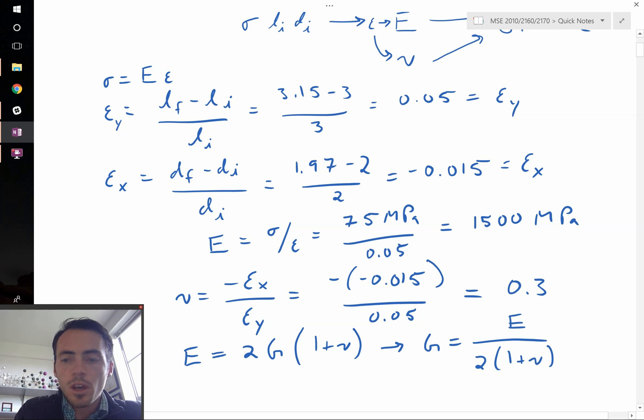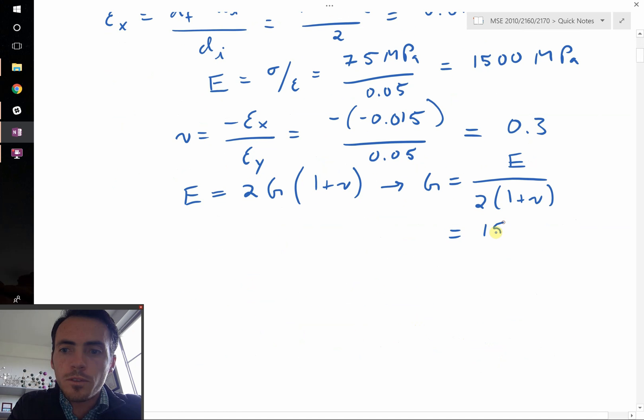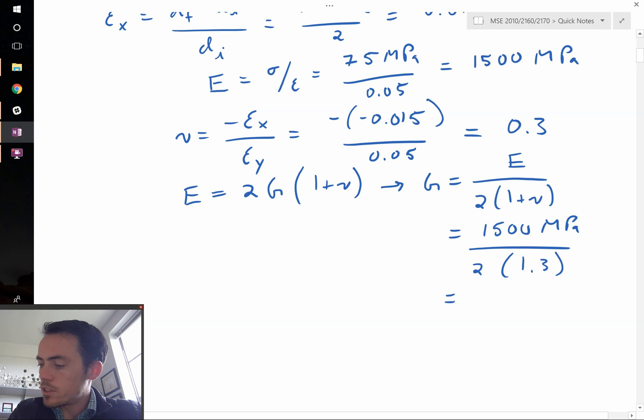That's equal to 1500 megapascals divided by 2 times 1.3, which comes out to 576.9 megapascals. That's our shear modulus, G. So now we're almost there.